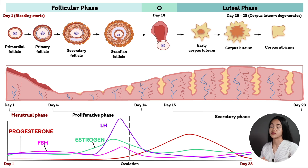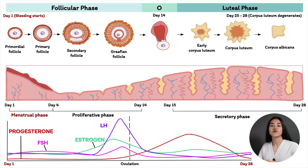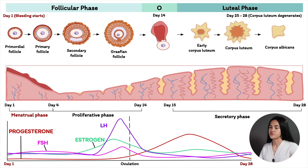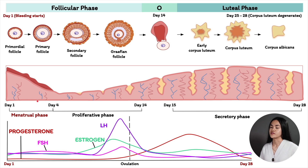During the secretory phase, progesterone also thickens the mucus created by the cervix — usually clear and watery — into a mucus plug to prevent bacteria from entering the uterus and to protect the growing embryo during gestation if fertilization has occurred. If implantation and fertilization don't occur, the corpus luteum degenerates, progesterone and estrogen levels drop, the functional layer and arteries supporting it rupture, and the epithelial layer is lost — this is the source of menstrual flow. When progesterone and estrogen levels drop, FSH and LH secretions increase again, triggering the start of a new cycle as new follicles begin to develop.